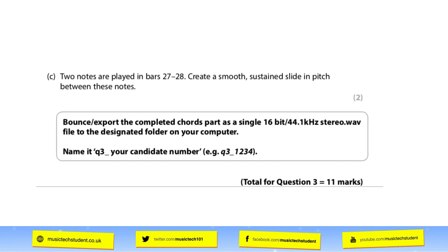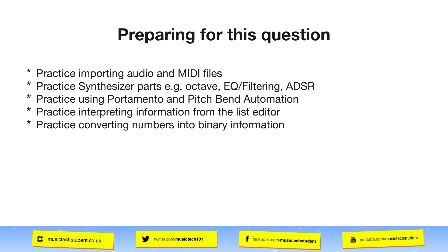The final question is about portamento, pitch, and manipulating notes. It says there are two notes played in bars 27 and 28 — create a smooth, sustained slide in pitch between these two notes. You can use either a portamento effect or pitch bend automation to make it really smooth between the notes, ensuring it glides like a chord part would without any sudden jumps. Finally, you'll be asked to bounce down the part — make sure you bounce it as question three with your candidate number on it. This question is worth 11 marks overall, so practice importing and exporting MIDI files, recreating synth parts, matching octaves, EQs and envelopes, and using portamento and pitch bend automation.